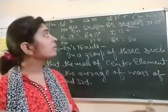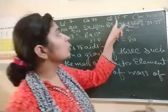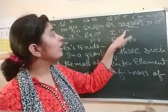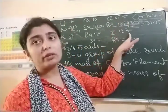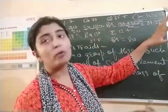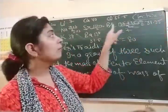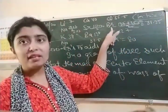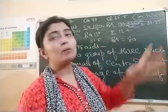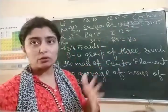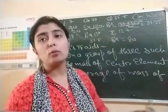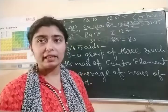Next is chlorine. Chlorine's mass is 35.5. Iodine's mass is 127. Taking their average gives 81.25. So the middle element bromine's mass comes out to be 81.25. And the actual mass of bromine is 80. So there is not much difference.